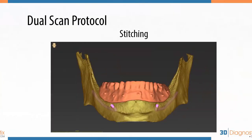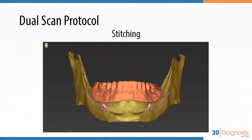Once we're done, we take those DICOM data, import them into the software, and stitch both scans together into one. This is how the final result looks — you can see the patient's arch and also the denture in place. We use those radiographic markers to stitch the scans together.